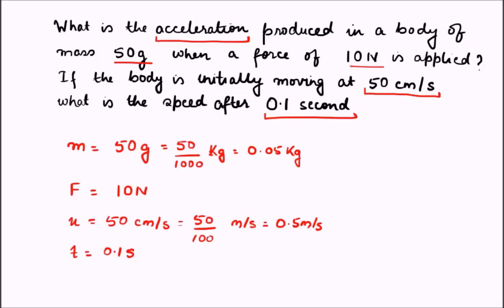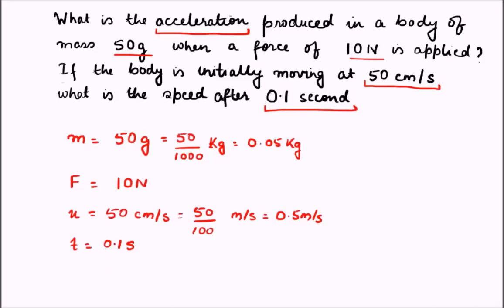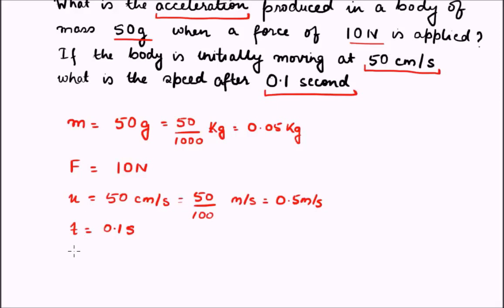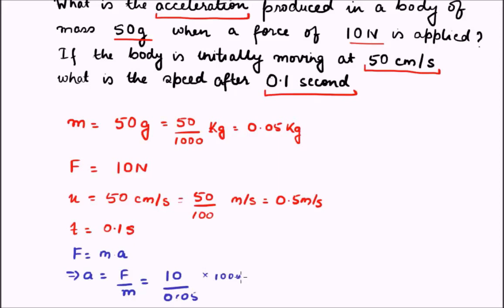For the first part we find the acceleration. Using force equals mass times acceleration, acceleration equals force divided by mass, which is 10 divided by 0.05, giving us 200 meters per second squared.